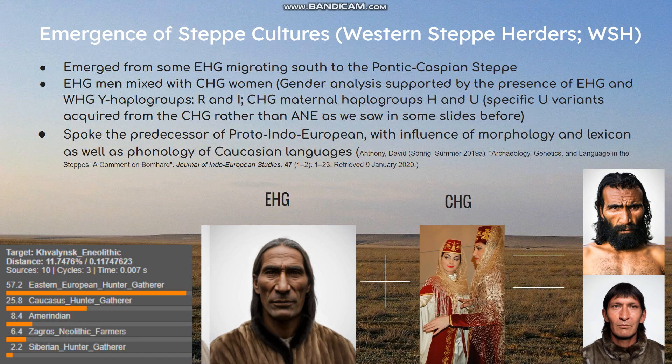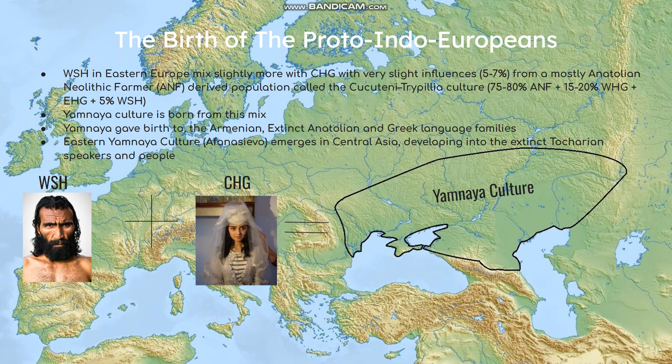These Western steppe herders spoke predecessors to Indo-European. I modeled the Western steppe herder here using a sample of Hvalinsk Neolithic. You can see they were mostly Eastern hunter-gatherer with some Caucasian hunter-gatherer ancestry. Zagrosian is genetically pretty much the same as Caucasian hunter-gatherer and they're often grouped together. Here you can also see a Amerindian and Siberian hunter-gatherer affinity, which shows the genetic affinities that these Hvalinsk or Western steppe herders had to the Ancient North Eurasians through their Eastern hunter-gatherer ancestry. It was a mix of EHG and Caucasus hunter-gatherer women — and these are what they looked like.